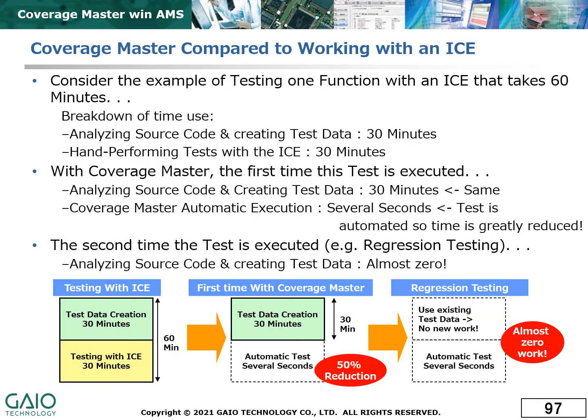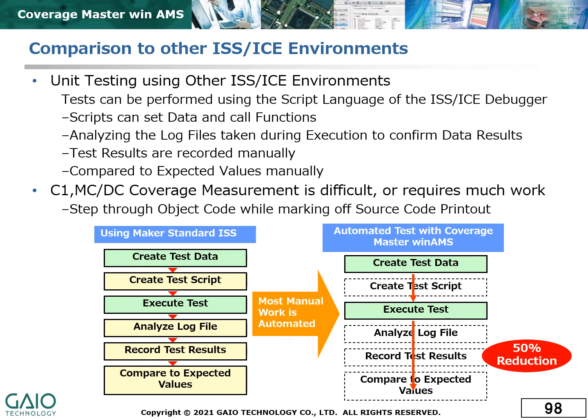This slide explains how the CoverageMaster WinAMS test process is much less time consuming than traditional testing with an emulator. In the traditional method, test data creation is necessary for each iteration of the test, as is the manual execution of the tests, requiring a lot of time for each round of testing. In contrast, CoverageMaster WinAMS reuses the test data after the first iteration, and the automated tests themselves are completed in a comparatively short time, so the workload is greatly reduced. Looking at the detailed steps of the measurement process in each case, it is easy to see why CoverageMaster WinAMS provides a much smoother, more efficient means of measuring coverage.